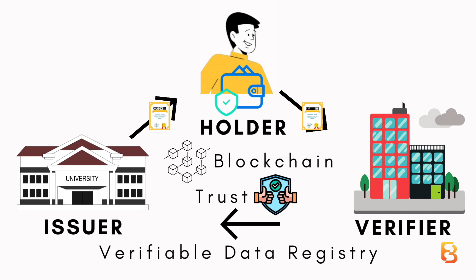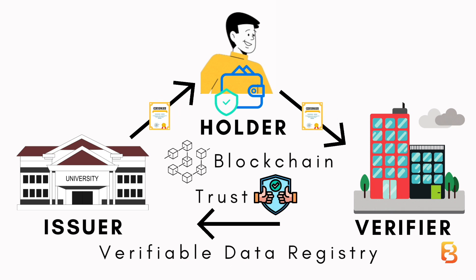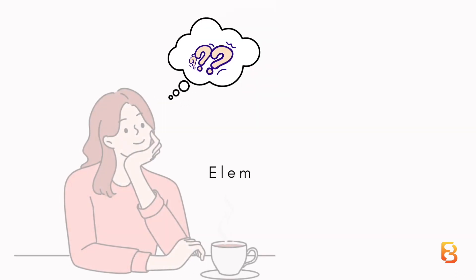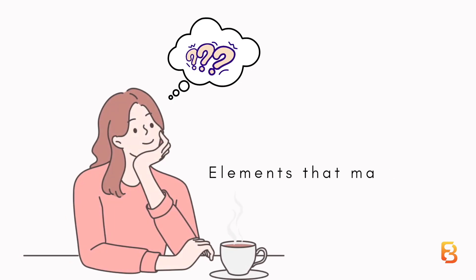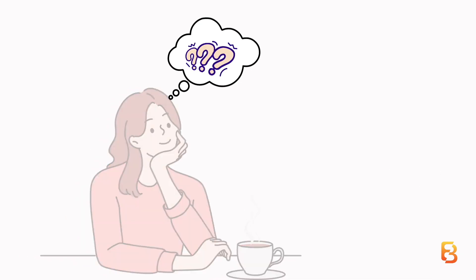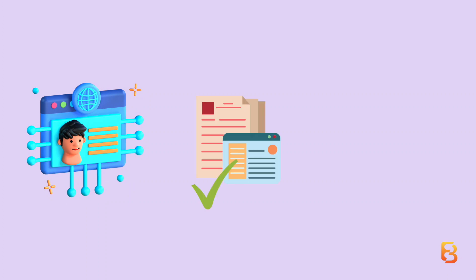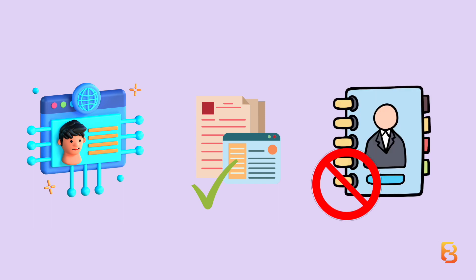Blockchain serves as a verifiable data registry and provides the mechanism for identity creation and operation. In my next video I'll cover the elements that make up a decentralized identity, but for now you should understand that decentralized identity gives you the option of sharing only the information necessary to verify identity, rather than giving broad access to personal information.